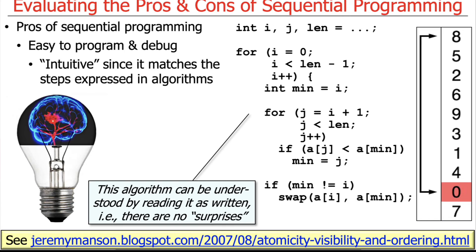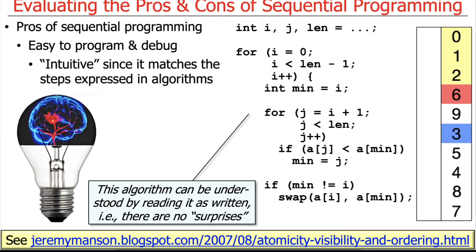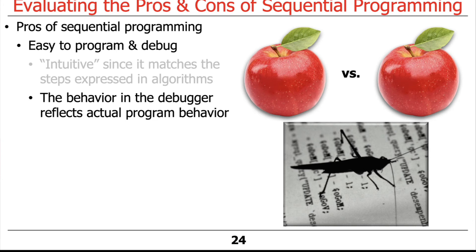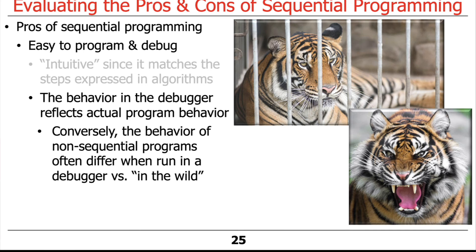We don't have to deal with things like race conditions, atomicity, or out-of-order instructions related to multi-core processor caches — it's very straightforward. Another nice thing is that the behavior in the debugger typically reflects the actual program behavior. What you see is what you get: you set a breakpoint, your code breaks, everything stops because you're in the debugger, there's only one thread, and nothing else is running. In contrast, with concurrent or parallel programs, they often behave differently when being debugged than when running in the wild.